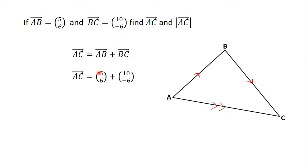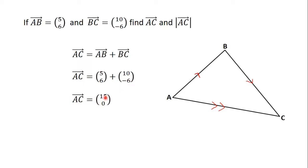AB is 5, 6 and BC is 10, negative 6. From the addition of vectors, we will have 5 plus 10, which is 15, and 6 plus minus 6, which is 0. So, vector AC is 15, 0.